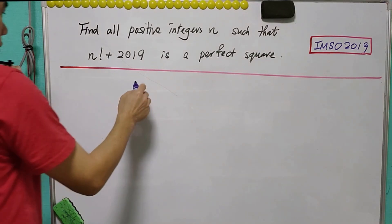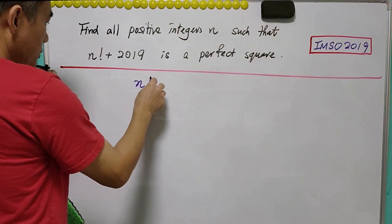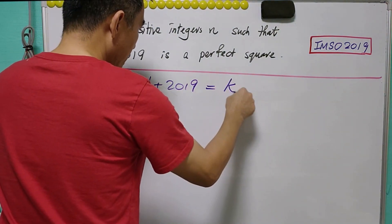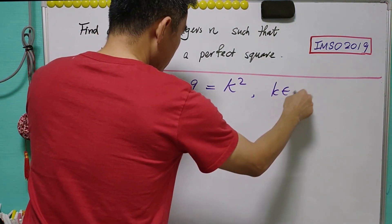We are asked to find all positive integers n such that n! + 2019 is a perfect square. In other words, we want to find n such that n! + 2019 can be written as k², where k is an integer.